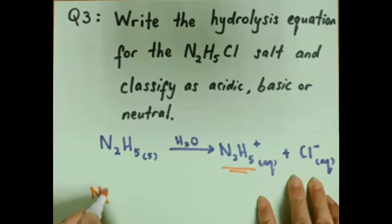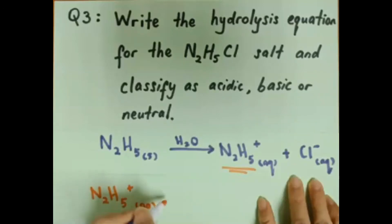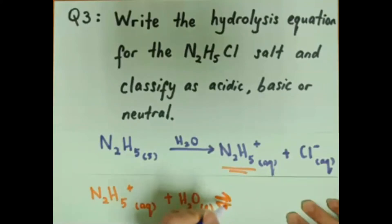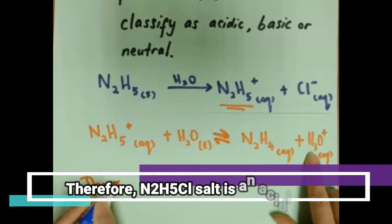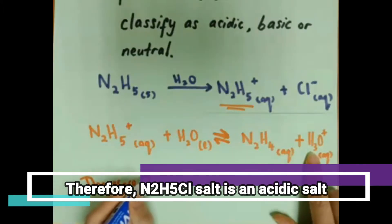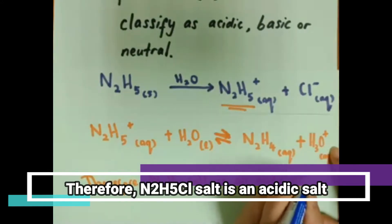The N2H5⁺ ion, the conjugate acid, undergoes hydrolysis. Please take note that a reversible arrow is used in writing the hydrolysis equation. In conclusion, from the hydrolysis equation, H3O⁺ (hydronium ion) is produced; therefore, N2H5Cl is an acidic salt.